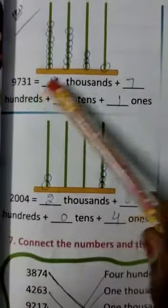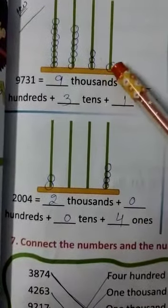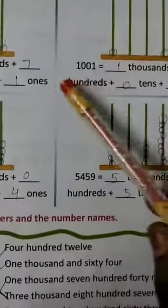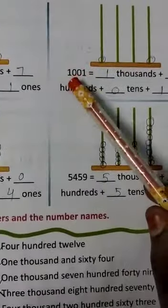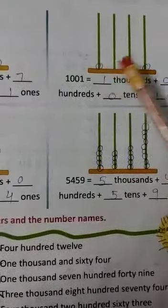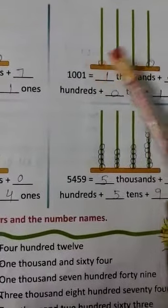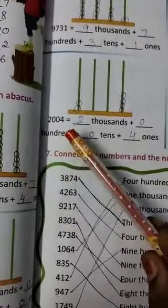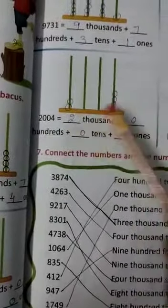On page 53, I will explain. 9731: 1 in ones place, next 3, next 7, next 9. So 9, 7, 3, 1. 1 one, 3 tens, 7 hundreds, 9 thousands. Next, 2004: 2, 0, 0, 4 beads.